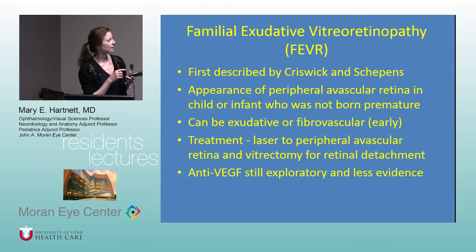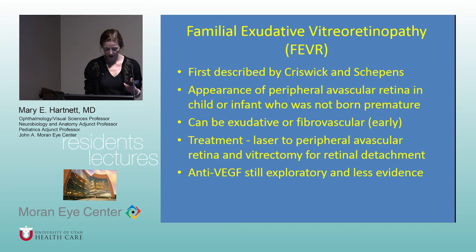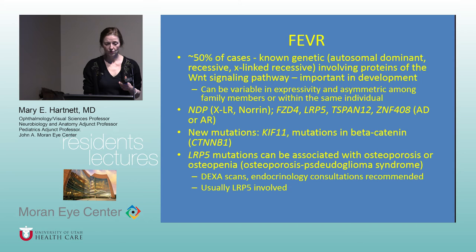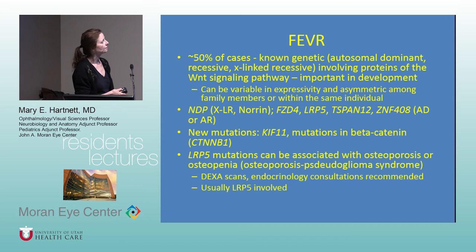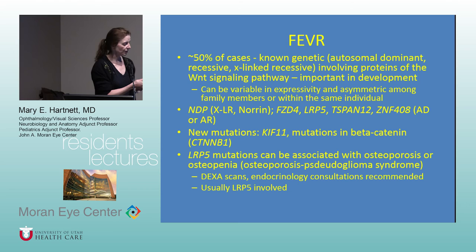This was an LRP5 dominant mutation — the mother also has that mutation but only has peripheral retinal pigmentation and is totally normal even on wide-angle fluorescein angiography. That illustrates FEVR's extreme differences in expressivity and variability, even between the eyes. Treatment is laser to the peripheral avascular retina. Some people use anti-VEGF, but I'm not sure the evidence is as strong. The main genetic causes involve mutations in the WNT signaling pathway: NDP (which also causes Norrie disease), FZD4, LRP5, TSPAN12, and also ZNF408 — not part of WNT signaling — and newer mutations in KIF11 and beta-catenin.